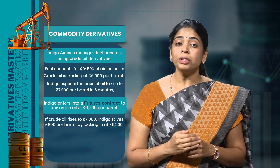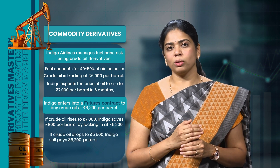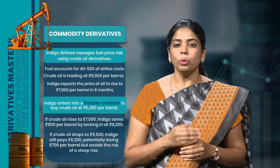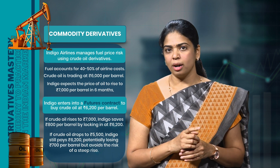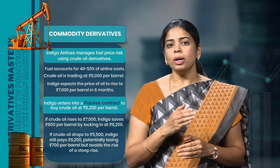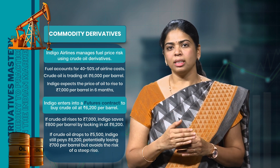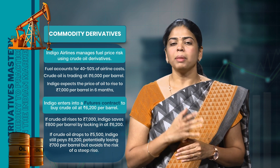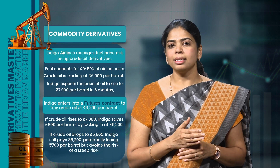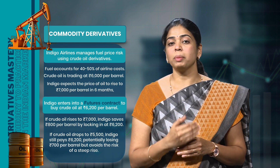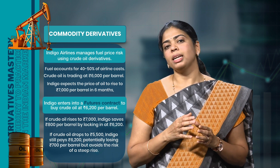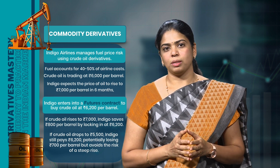But what if crude oil prices drop to Rs.5500 per barrel in 6 months? Indigo still has to pay Rs.6200 due to the futures contract, so they would end up paying more than the market price. Thus, by using commodity derivatives like futures, the airline company reduces the risk of unexpected rises in fuel prices, even though they might miss out on savings if prices drop.